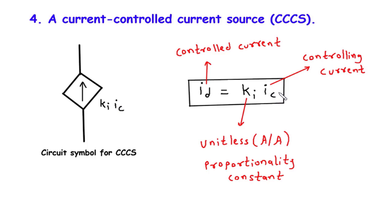In the CCCS, the output current ID is directly proportional to the input controlling current IC. This means that as we increase or decrease the controlling current, the controlled current will also change accordingly. To express this relationship mathematically, we use the equation ID equals K asterisk IC. Here, K represents the proportionality constant, which is unitless and has the dimension of A/A, or amps per ampere. The value of K determines how the controlling current IC influences the controlled current ID.